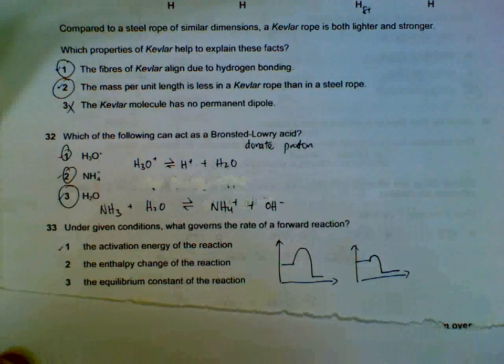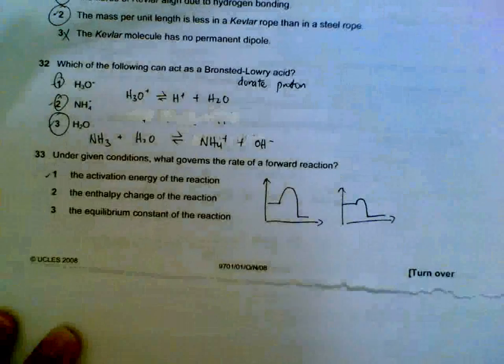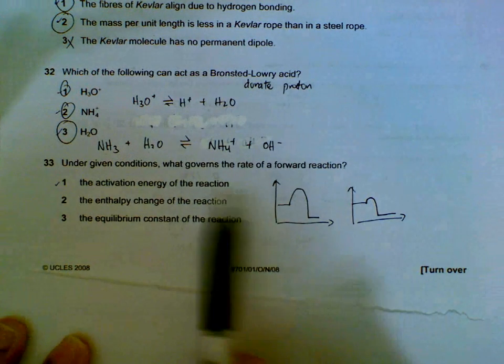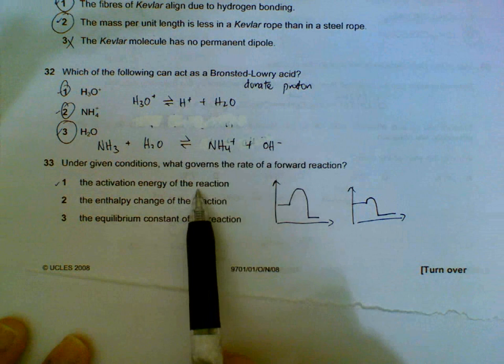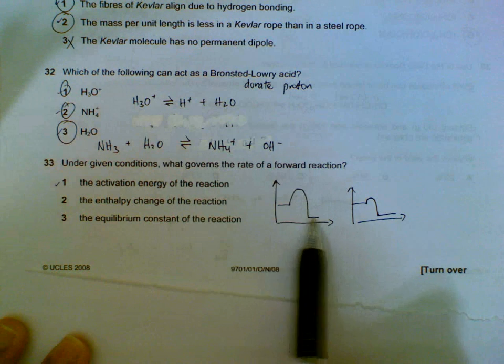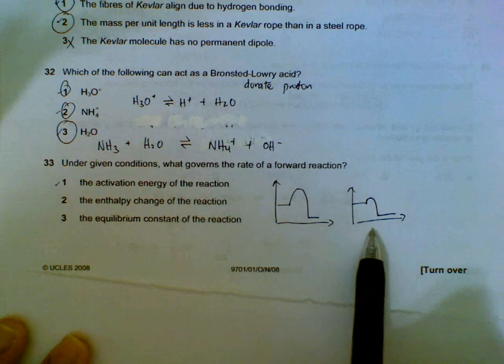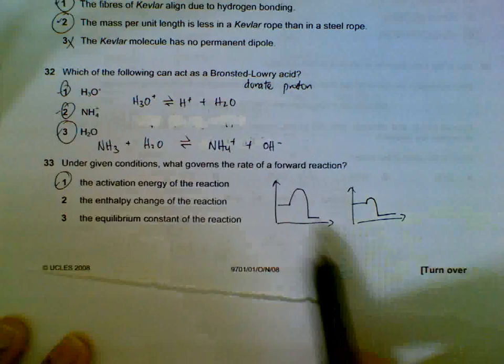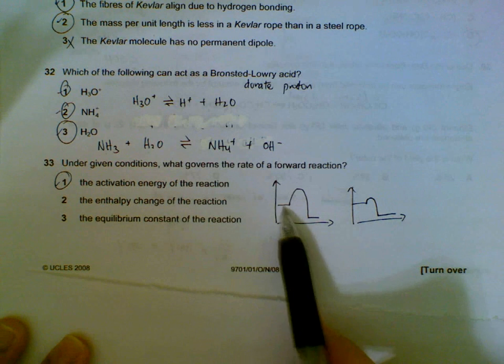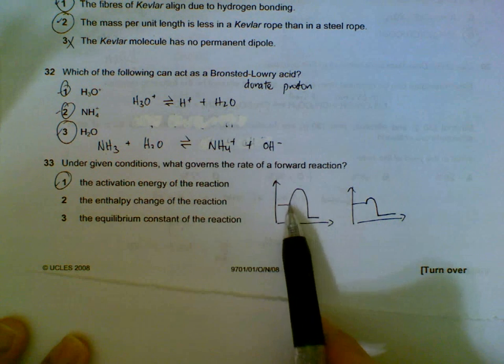Number 33: Which one governs the rate of a forward reaction? First statement is correct: activation energy. The higher your activation energy, the slower your reaction will be. So the one on the left will be slower than the one on the right. The enthalpy change doesn't affect the speed.